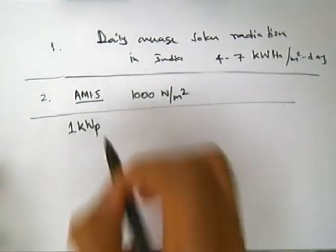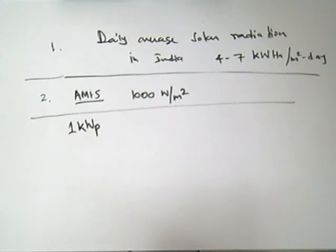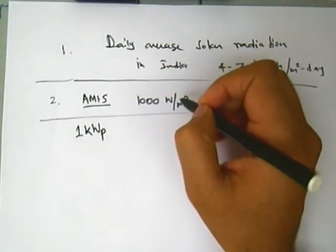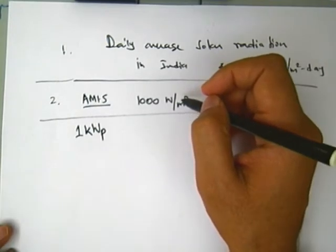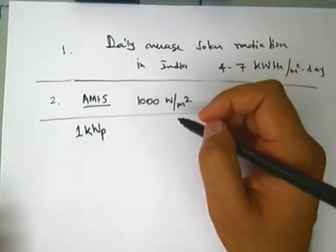If I install 1 kilowatt peak power at any given location and I want to estimate how much energy it will generate on a daily basis, there are some quick ways to look at it. If you look at one full day, it starts from morning to afternoon to evening. The day length in our country varies from 12 to 18 hours, but during the day the intensity is not always 1000 watt per meter square — it keeps changing. In the morning it will be very low, afternoon it will peak, and in the evening it will go down again.